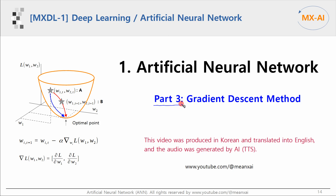This is part 3 of a series on artificial neural networks. In this video, we will look at the gradient descent algorithm. This video was produced in Korean and translated into English. The voice was generated by AI text-to-speech.